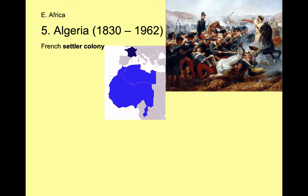Moving to Northern Africa: from 1830 to 1962, the French controlled Algeria. It started as a French settler colony — France is just north across the Mediterranean from Algeria, so French settlers moved there with their families. It was actually going to become a part of France — a state within the country of France — electing people to the French government. So the French moved there in another example of a settler colony.